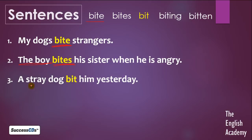Another sentence is: 'A stray dog bit him yesterday.' This is of the past tense. Jab bhi hum bhoot kaal ka vaakya banayenge, hum karenge bit — B-I-T, bit — kaata tha. Ek stray dog ne usse kal kaata tha. Tab hum use karenge bit.